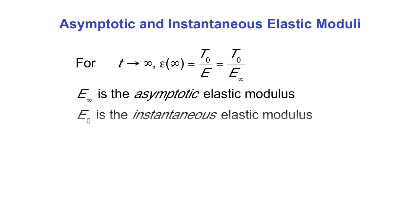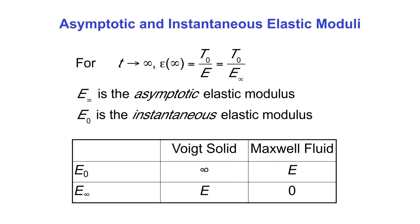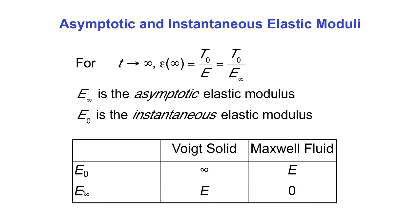Looking at the asymptotic and instantaneous elastic moduli: as time tends to infinity, epsilon approaches T0 over E, so the asymptotic modulus E infinity equals E. The instantaneous modulus is infinite since the strain at time zero is zero in the Voigt solid. Summarizing: the instantaneous elastic modulus was infinity for the Voigt solid and E for the Maxwell fluid, whereas the asymptotic elastic modulus was E for the Voigt solid and zero for the Maxwell fluid.